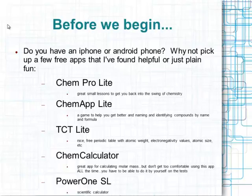The next one is ChemCalculator. It's great for calculating molar mass, but I caution you not to get too comfortable using it every time you have to do molar mass, because on tests, quizzes, and especially the AP exam, you'll be expected to calculate those molar masses yourself. The next one is Power1SL — a handy scientific calculator with two versions: one free, one paid that becomes a graphing calculator. The regular scientific calculator is super handy. If you can think of any more apps, please post them on our website.